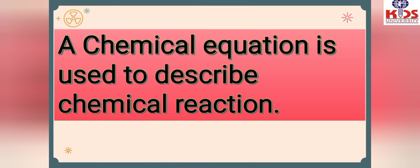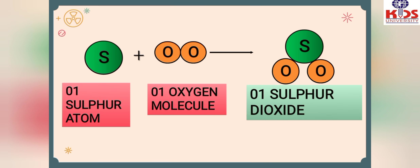A chemical equation is used to describe a chemical reaction. We describe any chemical reaction using a chemical equation, writing chemical formulas as learned in the previous chapter. The chemical equation tells us between which substances the reaction occurred, how many atoms were formed or broken, how many molecules were produced, and which atom recombined with which other atom.